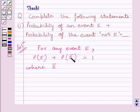Here E bar stands for not E. And E and E bar are called complementary events.